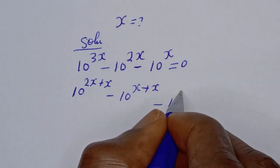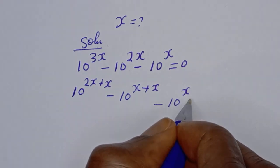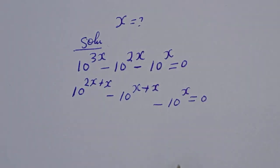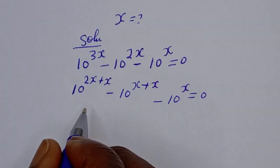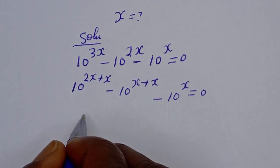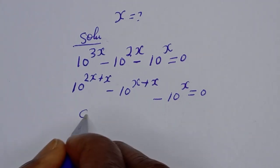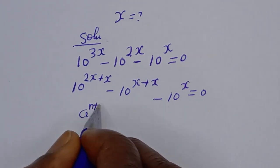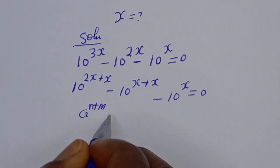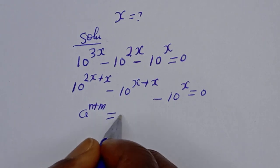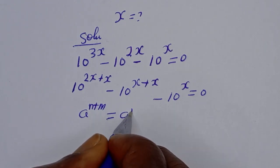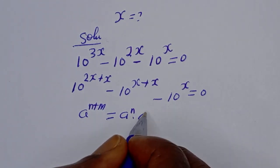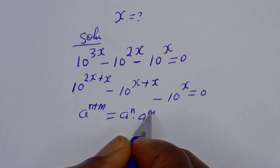Take note of this exponent rule: if you have a raised to power n plus m, this is equal to a raised to power n multiplied by a raised to power m.